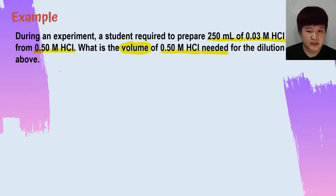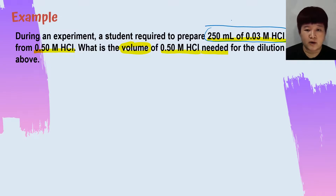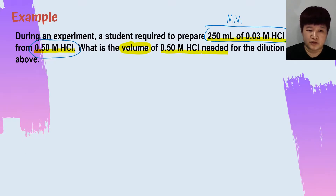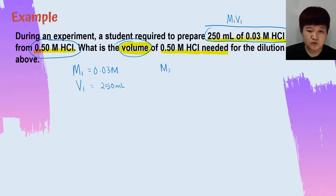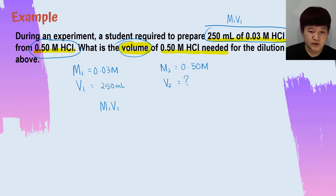First, we take out the information. You can decide who is M1, V1, M2, and V2. I will normally take the first set as M1 and V1, and the second set as M2 and V2. So M1 is 0.03 molar, V1 is 250 millilitres, M2 is 0.5 molar, and V2 is the one we are looking for.